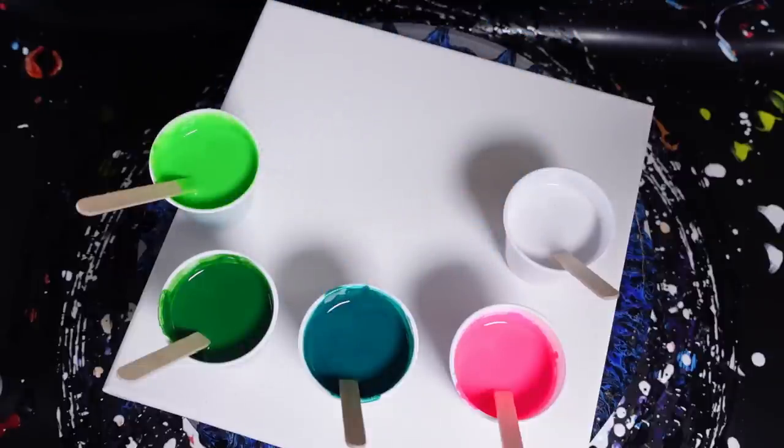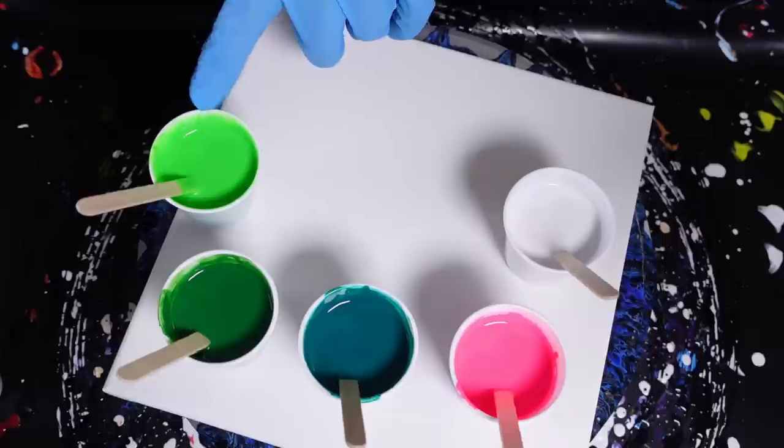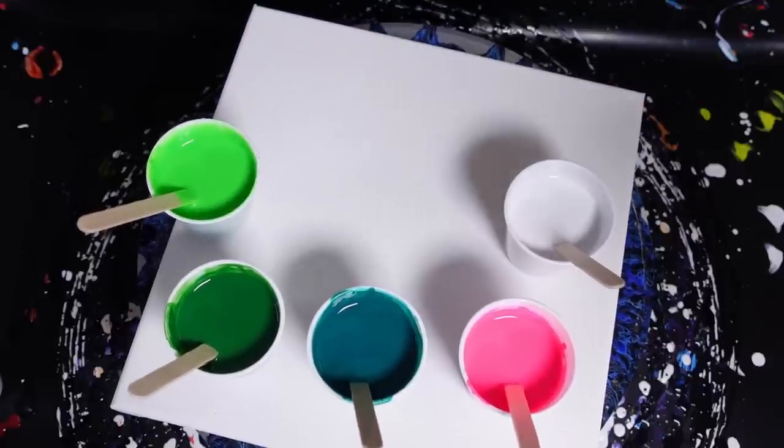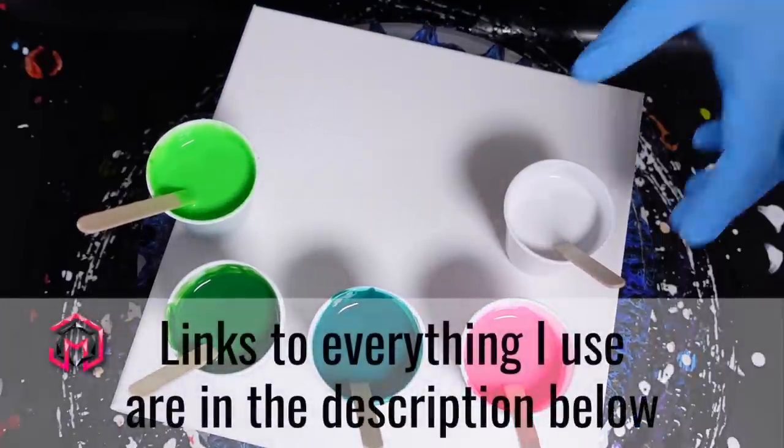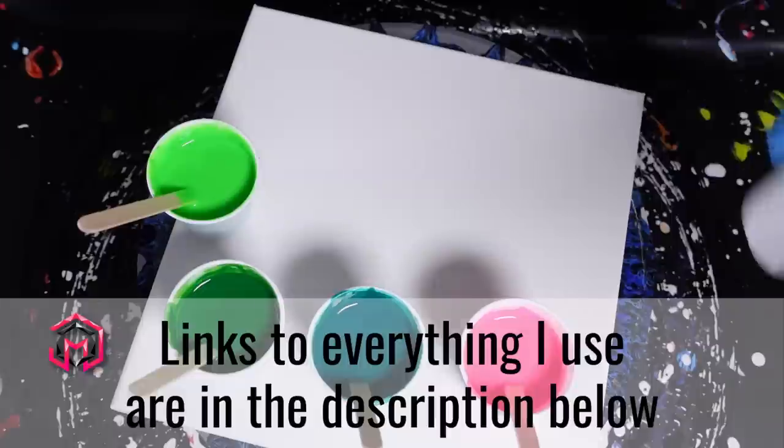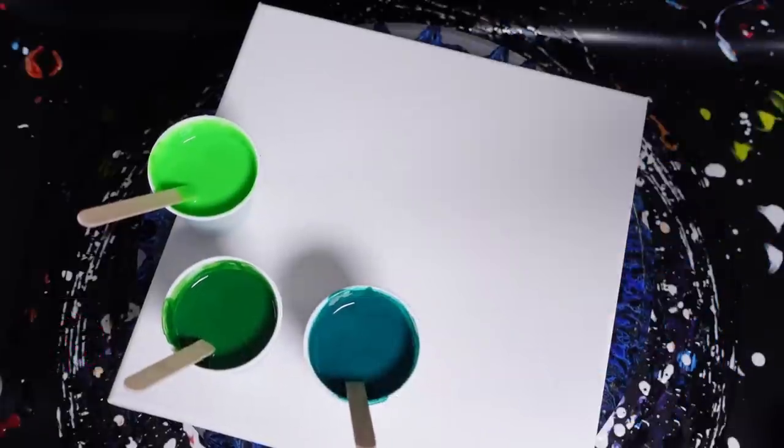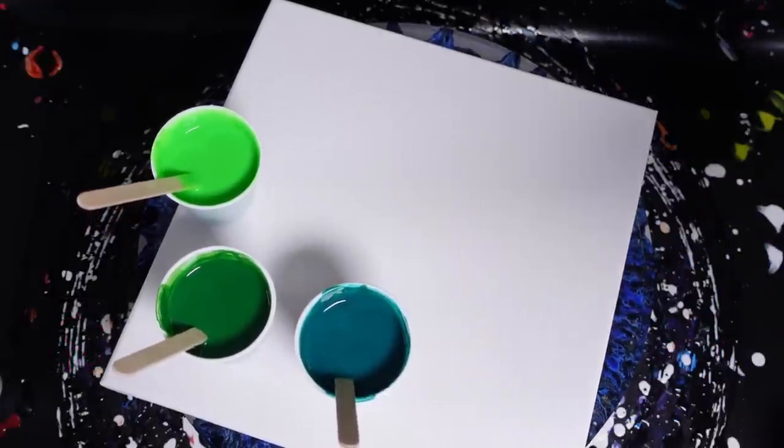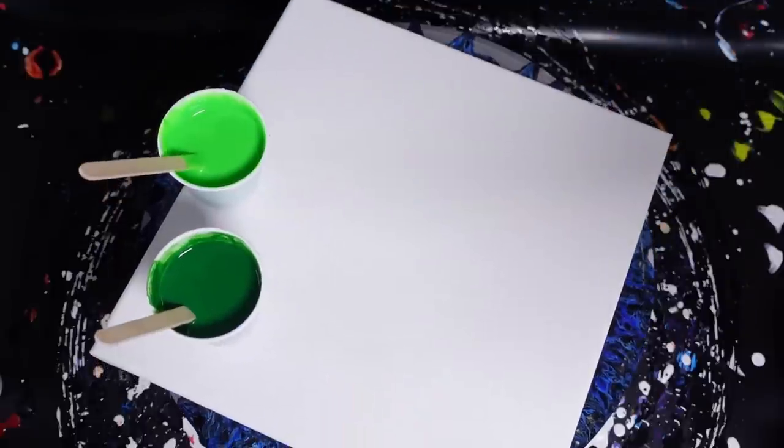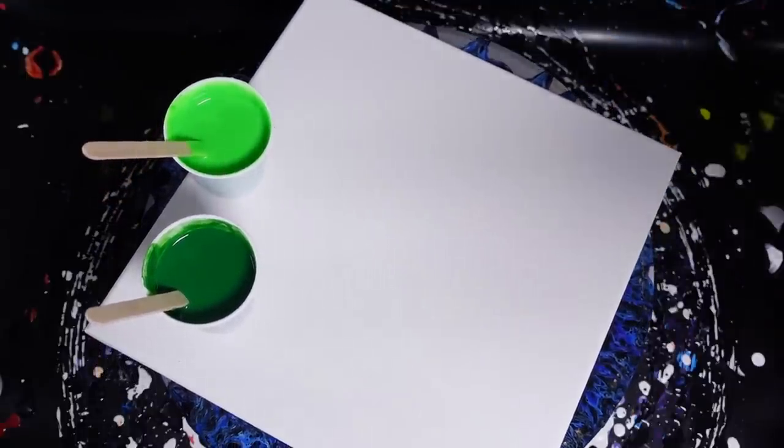I mixed a couple colors together to make that one, and lime green, and the titanium white. The titanium white is going to be the base. I've added a small amount of silicone to each one of these, one to two drops of silicone. Other than that it was a one part paint to two part pouring medium mix.